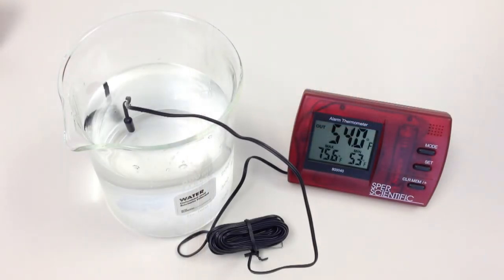Model 800-042R features an internal and external temperature sensor mounted on a nine foot long cord. The sensor is waterproof and can be used outdoors or in liquid.